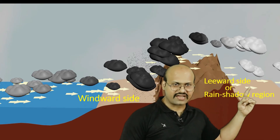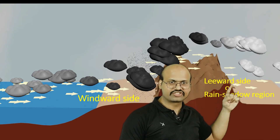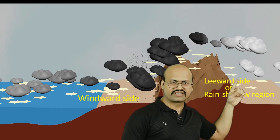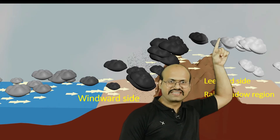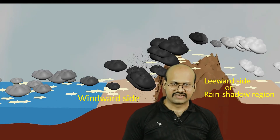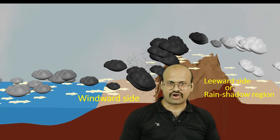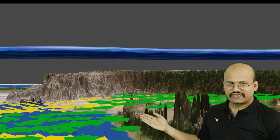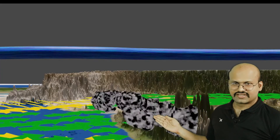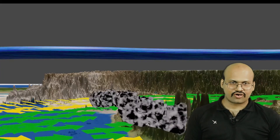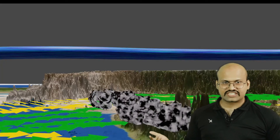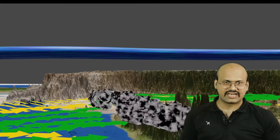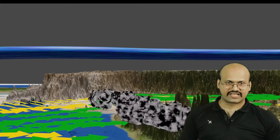The other side where the air descends is called the leeward side or rain shadow region. It is called rain shadow because the descending air is adiabatically heated, and heated air does not give rainfall to that region. We see this in our monsoon rainfall — the Western Ghats obstruct the monsoon winds, causing heavy cloud formation on the western side, while the eastern side of the Western Ghats receives very little rainfall because the descending air is adiabatically heated.